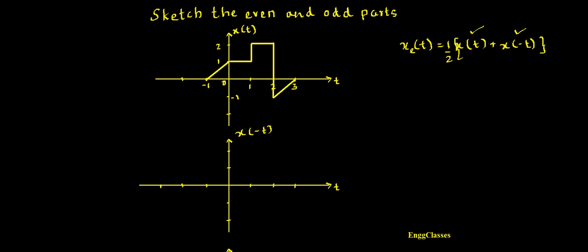x(-t) is nothing but the reflected version of x(t). The original limits are 0, minus 1, which would become 0 and plus 1, and limits 1, 2, 3 would become minus 1, minus 2, minus 3. These are the limits of the new signal x(-t). To sketch the reflected version I have to fold this signal x(t) along the vertical axis.